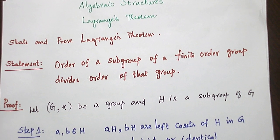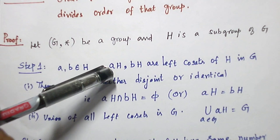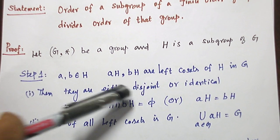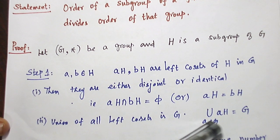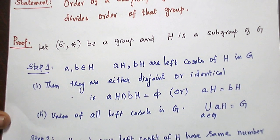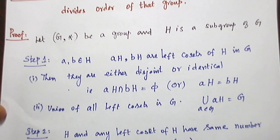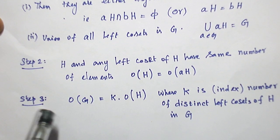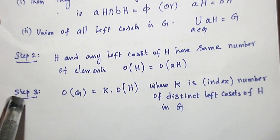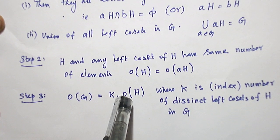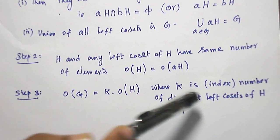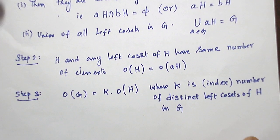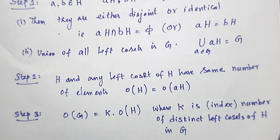Proof — we are going to proceed in three steps. First step: I take two left cosets; the left cosets are either distinct, disjoint, or identical, and they form a partition for the original group G. Step two: the number of elements in any left coset is equal to the order of the subgroup H. Step three: we are going to prove the order of G is a multiple of the order of H. That multiple is the number of distinct left cosets of H in G. Sometimes they may ask these statements as separate questions.